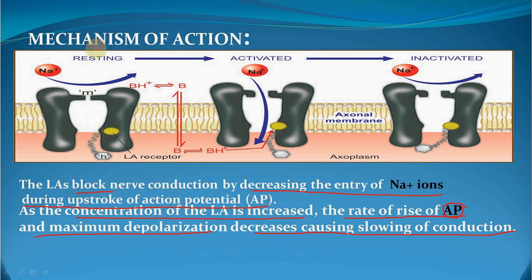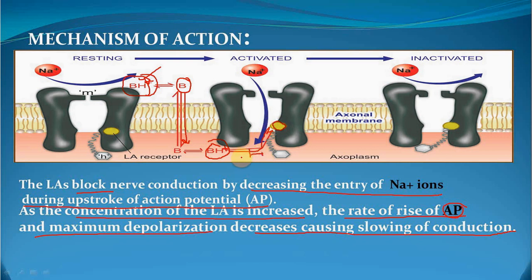At physiologic pH, the local anesthetic molecule is partly ionized — meaning two forms exist in equilibrium: the unionized form and the ionized form. The unionized form is capable of penetrating the axonal membrane, but the active species is the ionized (cationic) form. The ionic form binds to the receptor only when the channel is open at the inner face, and it binds rapidly to the activated as well as inactivated state of the channel, compared to the resting state which is resistant to blockage.